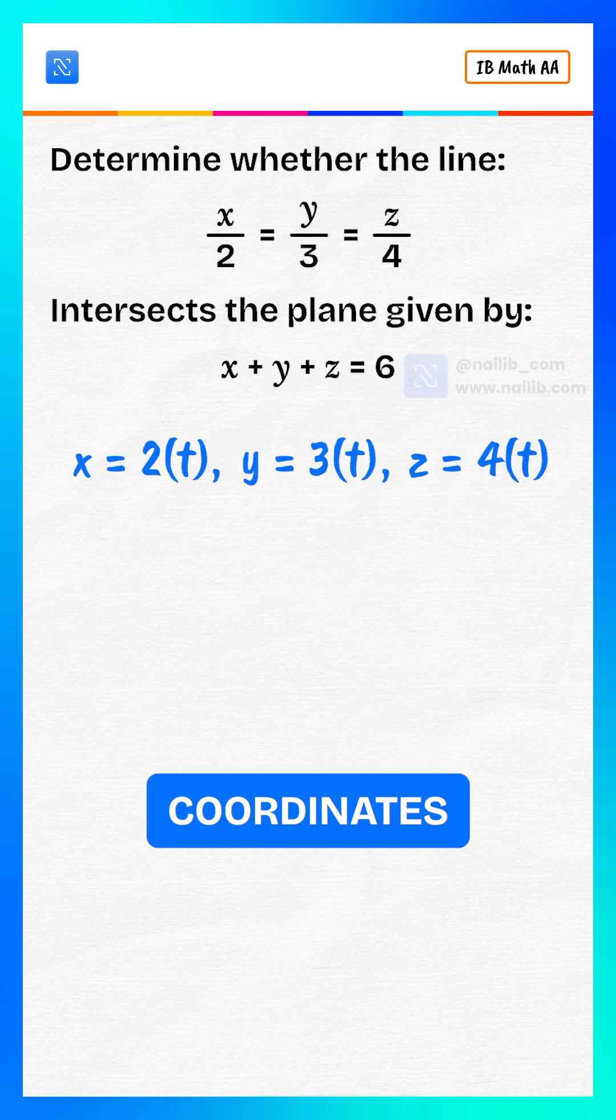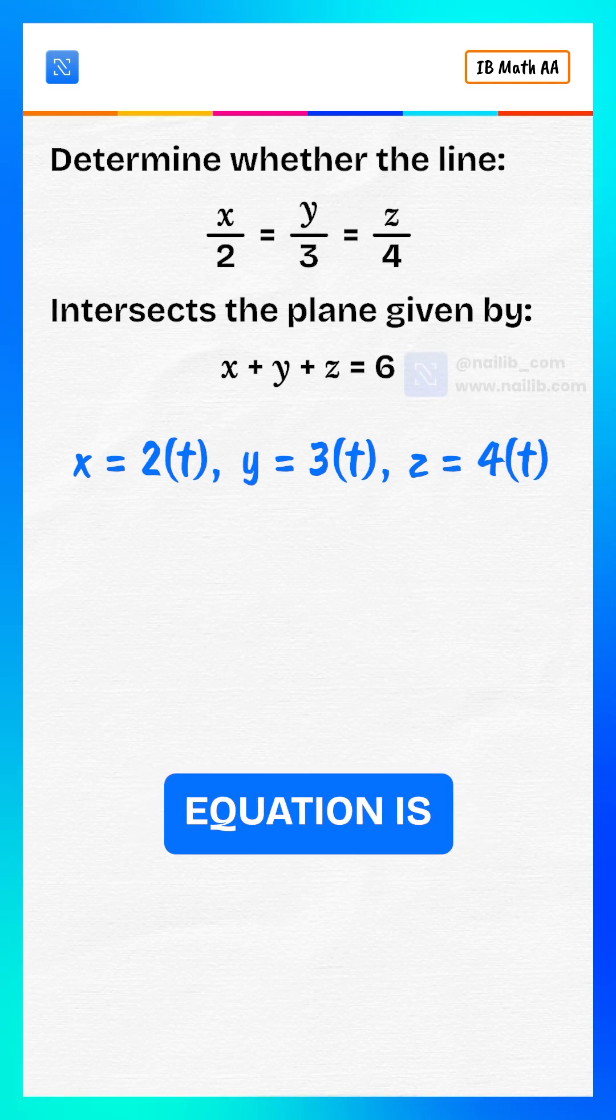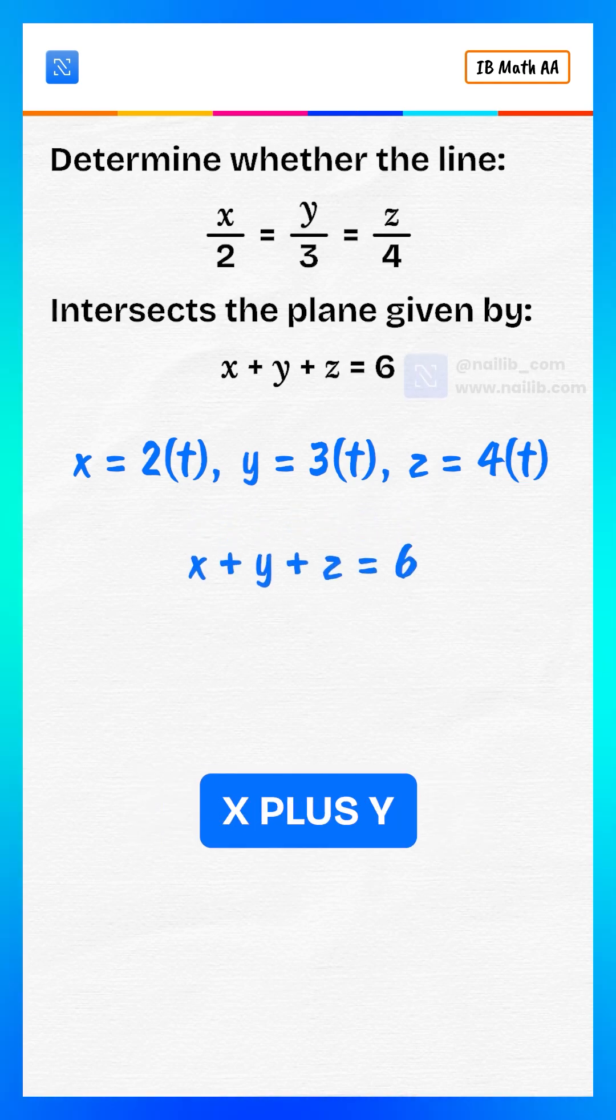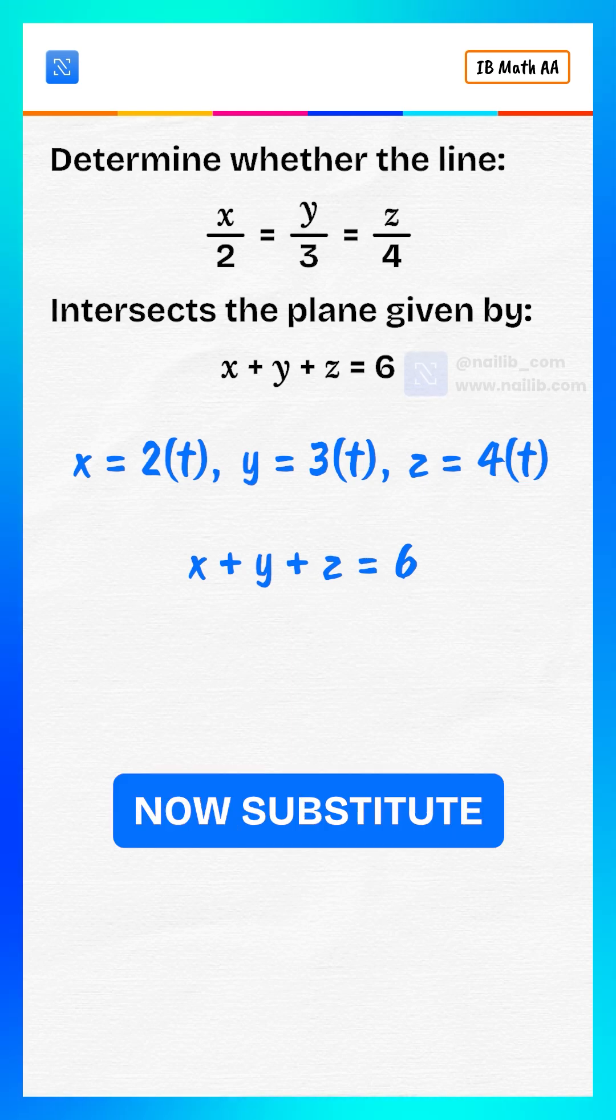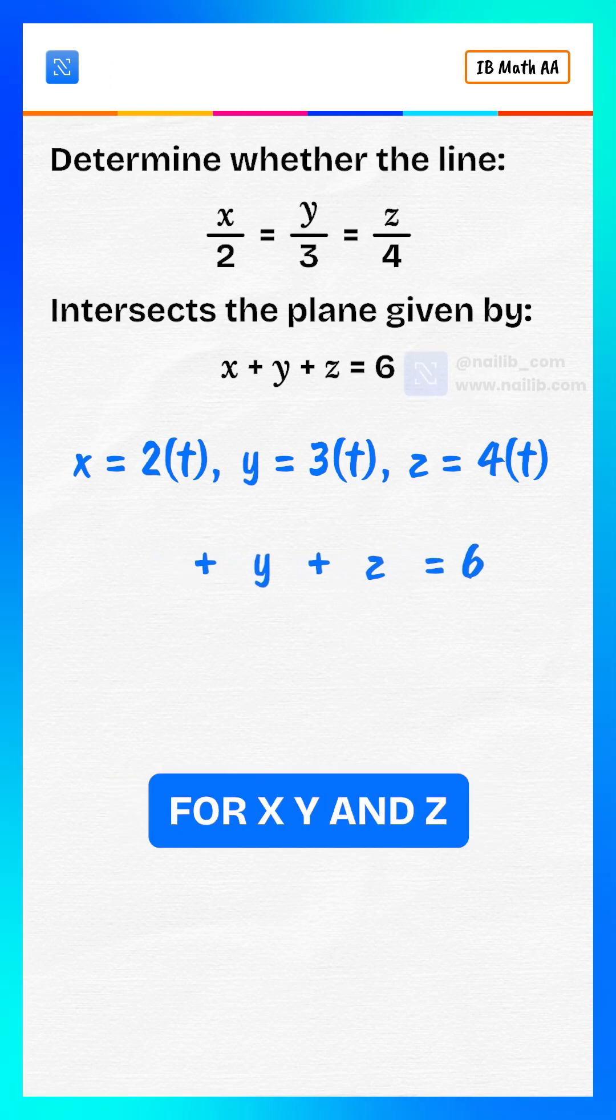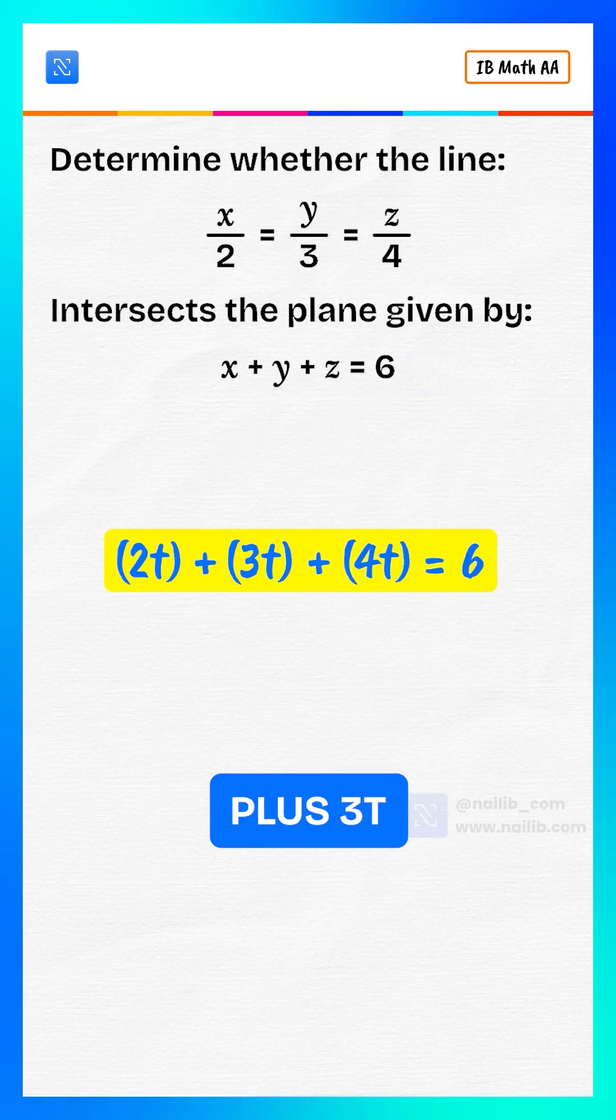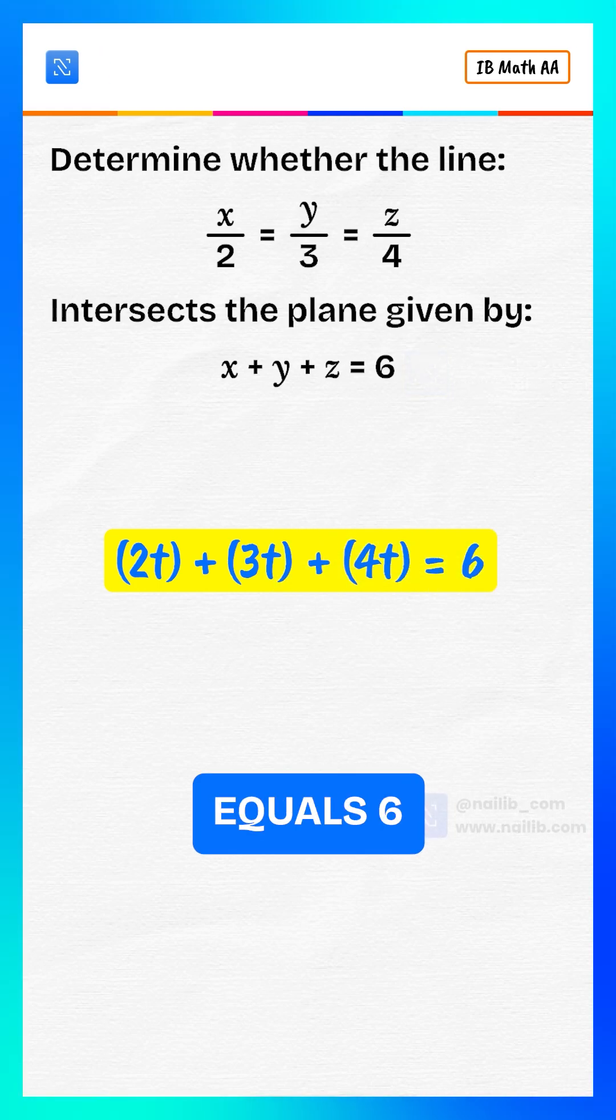Substitute the line coordinates into the plane equation. The plane equation is x plus y plus z equals 6. Now substitute the expressions for x, y, and z. 2t plus 3t plus 4t equals 6.